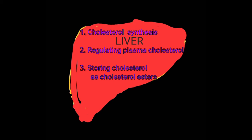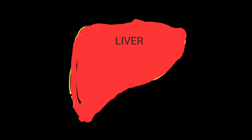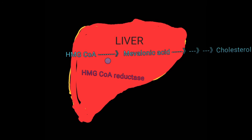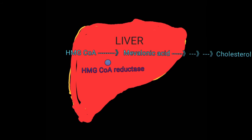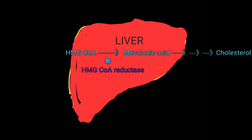Cholesterol biosynthesis in the liver is tightly regulated and is dependent on the rate-limiting enzyme in the liver: hydroxymethylglutaryl-CoA reductase, or HMG CoA reductase. There are several ways in which HMG CoA reductase activity is regulated.